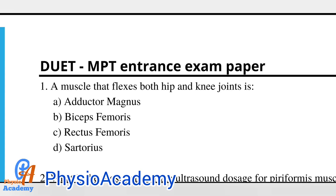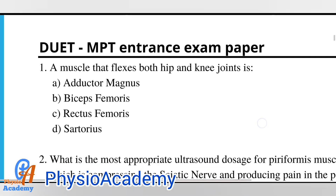University MPT entrance exam paper. Question number one: a muscle that flexes both hip and knee joints is option A adductor magnus, B biceps femoris, C rectus femoris, option D sartorius. The correct answer is option D sartorius.